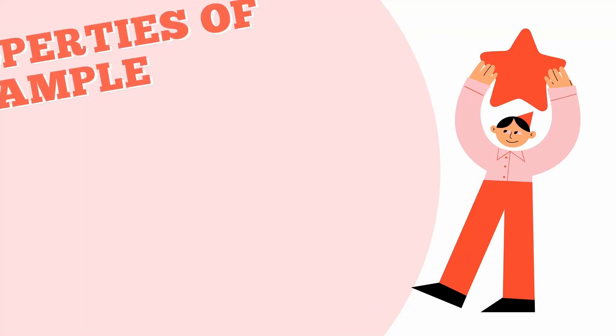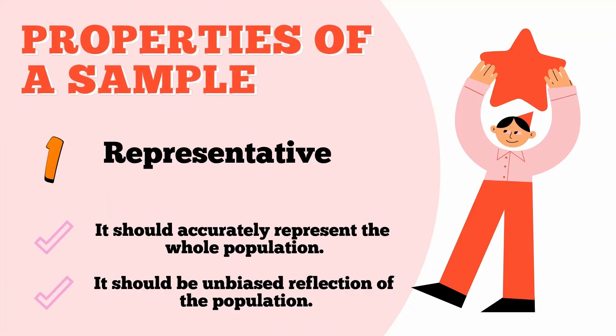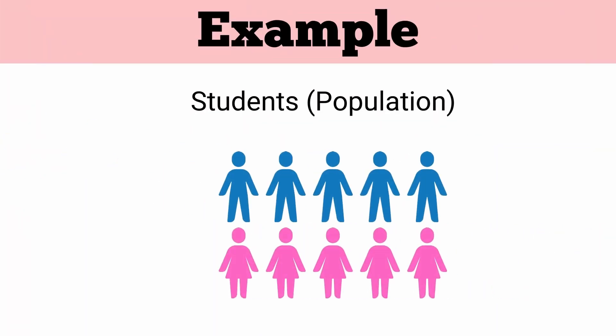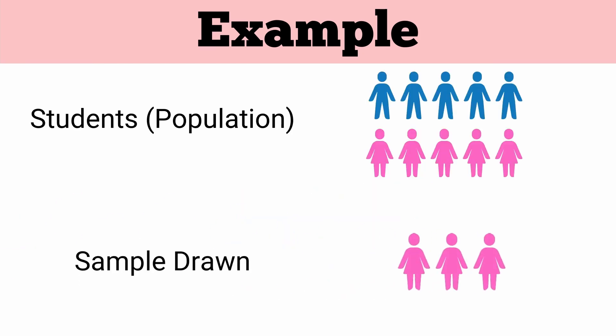Some properties of a sample must be kept in mind while collecting them. First, the sample should be representative of the population, meaning it should accurately represent the whole population and be an unbiased reflection of what the population looks like. For example, if our population is students in a class containing both boys and girls, but the sample taken only contains girls, then the sample is not representative. Since it does not share the same characteristics as the larger population, we cannot generalize our results to the whole class.